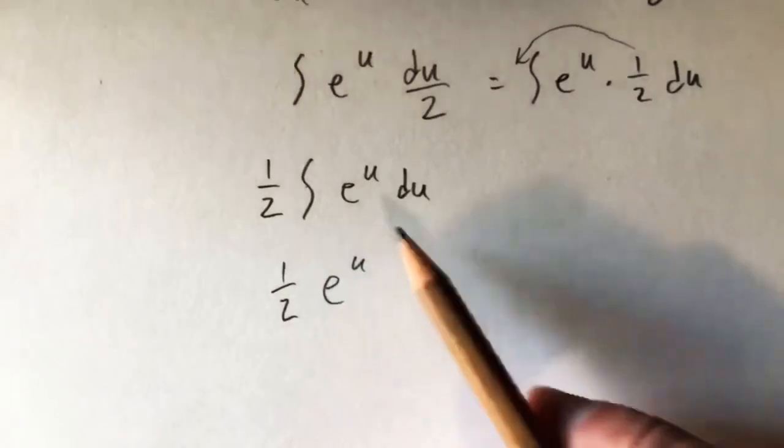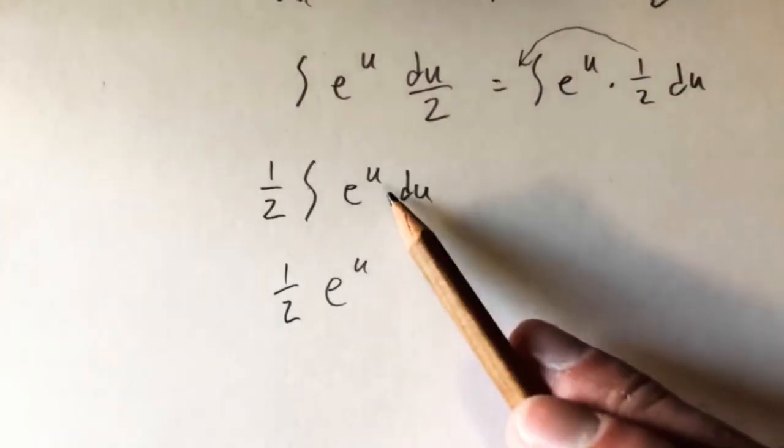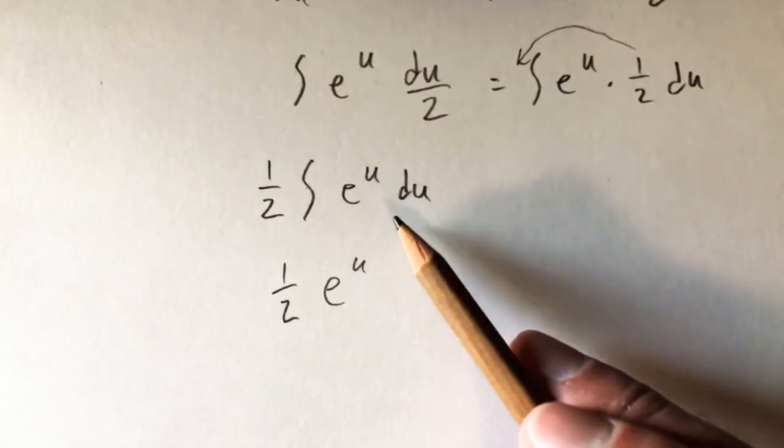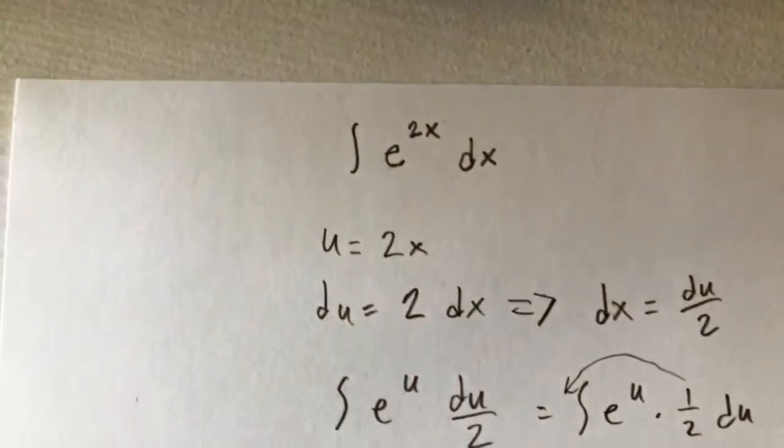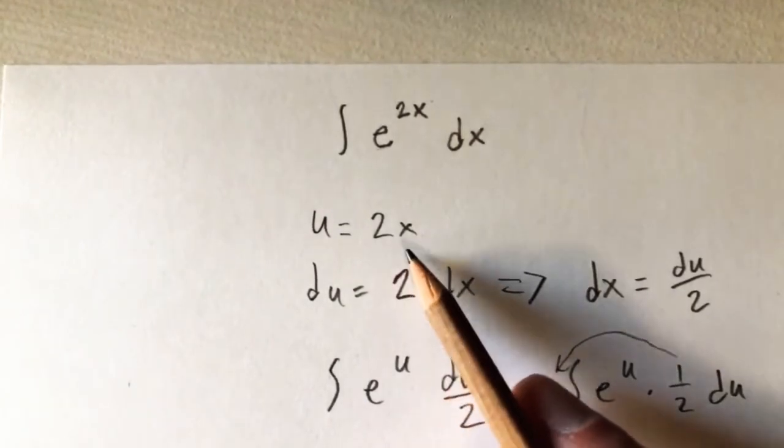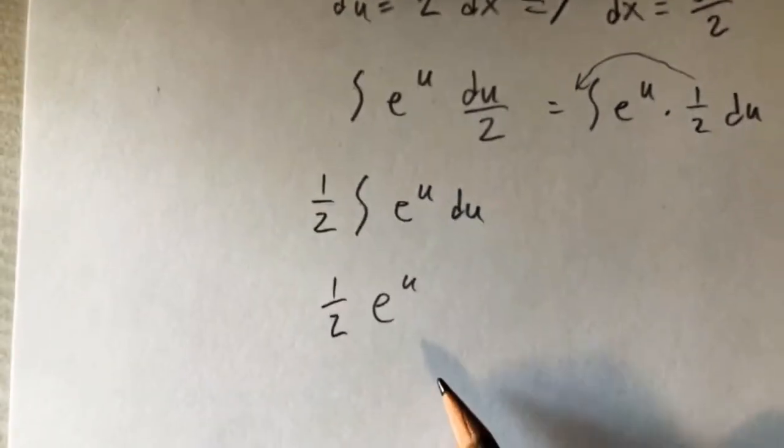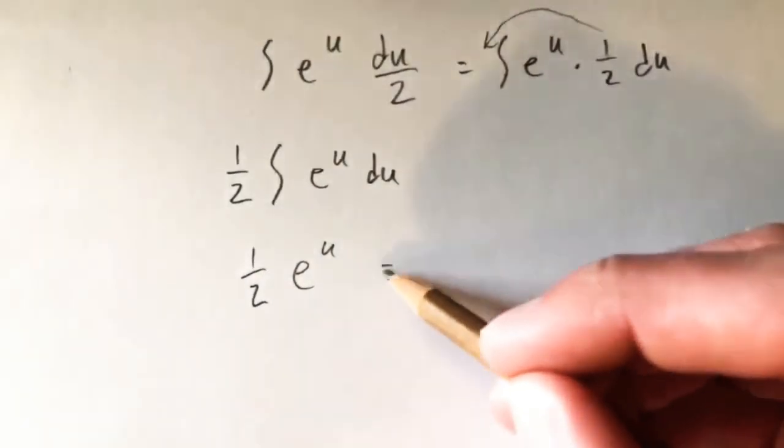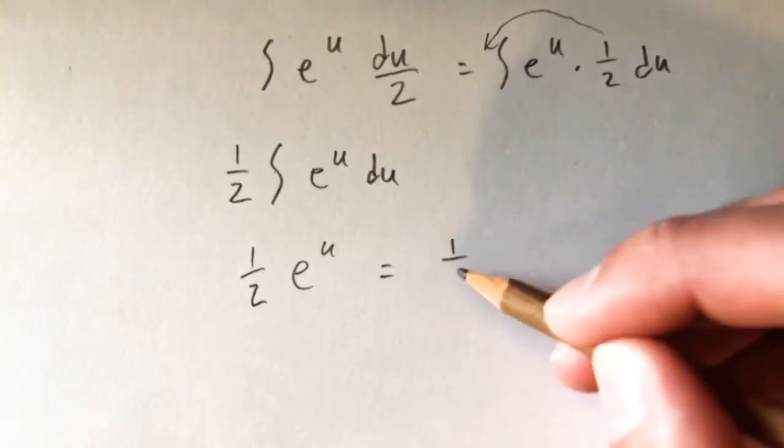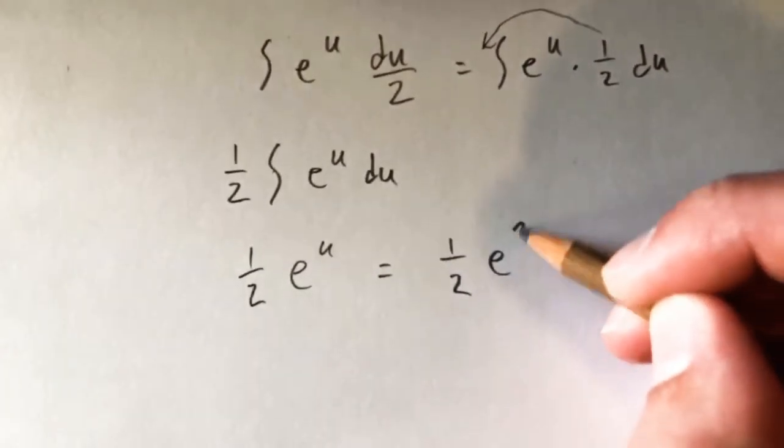So now that we've actually done the integral, we've computed the antiderivative of this piece here, we can just substitute our u back in. So we know u is 2x. We can just replace our u down here with a 2x, telling us that this integral equals 1 half e to the 2x.